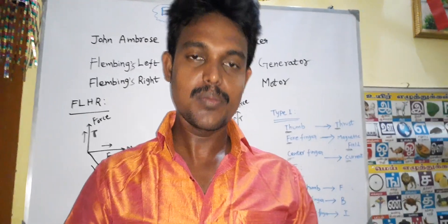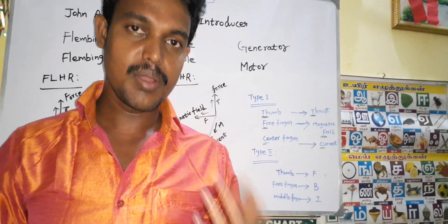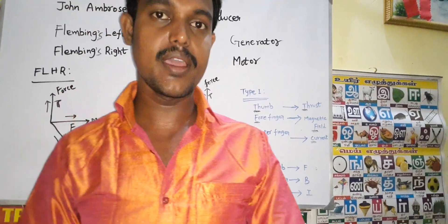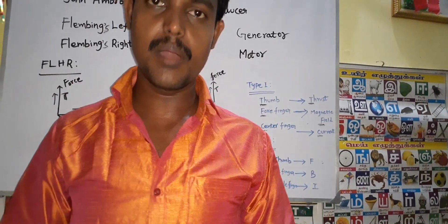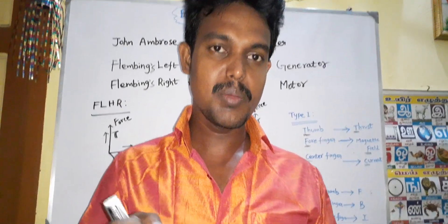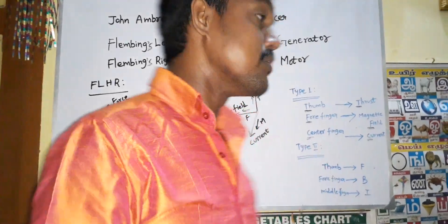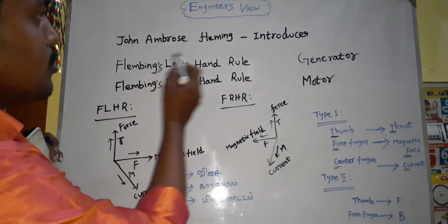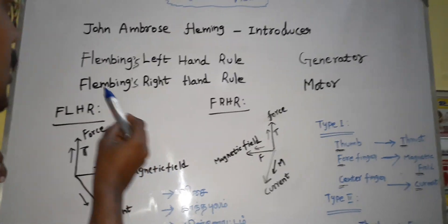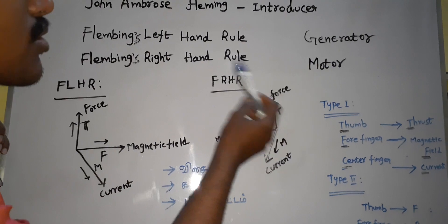So the third is Fleming's left-hand rule. Fleming's rule was introduced by John Ambrose Fleming. In short form, there is Fleming's left-hand rule and the right-hand rule — one for motor and one for generator.